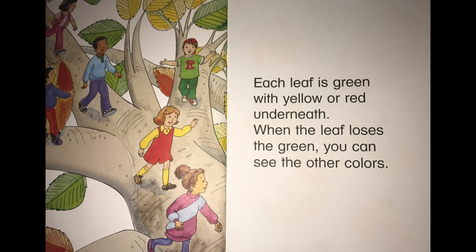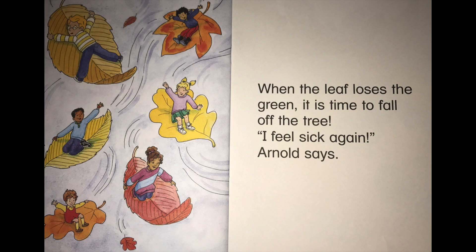Each leaf is green with yellow or red underneath. When the leaf loses the green, you can see the other colours. When the leaf loses the green, it's time to fall off the tree. "I feel sick again," Arnold says.